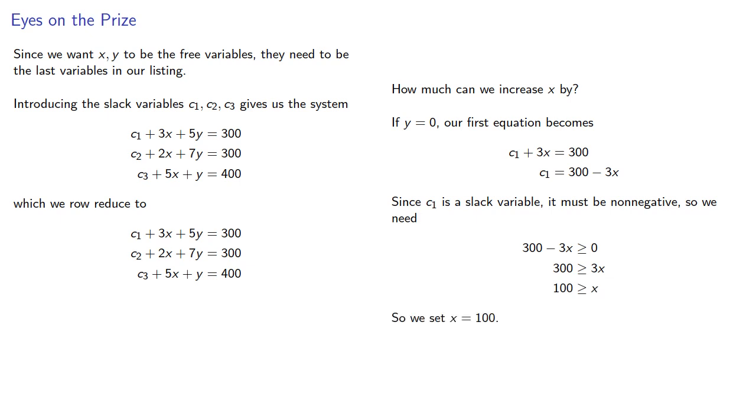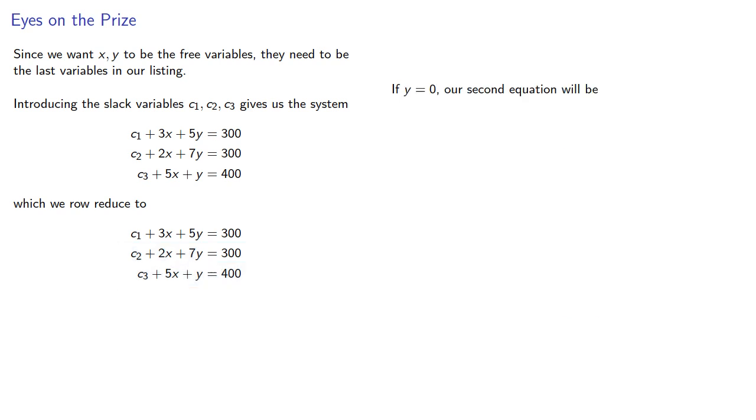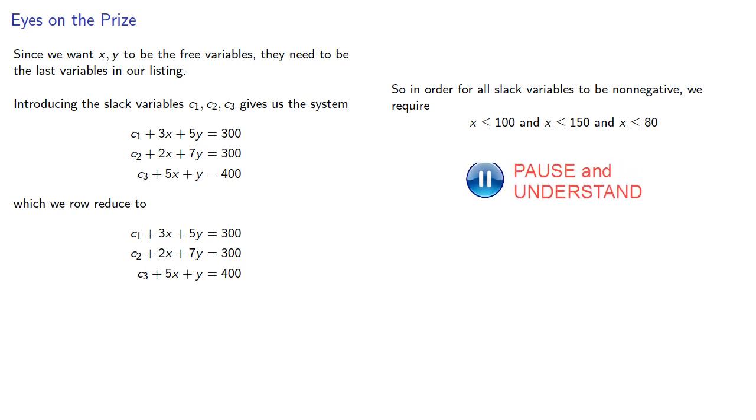So we can set x equal to 100. Or can we? Don't forget there's two other slack variables. If y equals zero, our second equation will be. Again, c2 must be non-negative, and so we find. And if y equals zero, our third equation will be. And in order to make c3 non-negative, we require. So in order for all slack variables to be non-negative, we require. So the most x can be is 80.